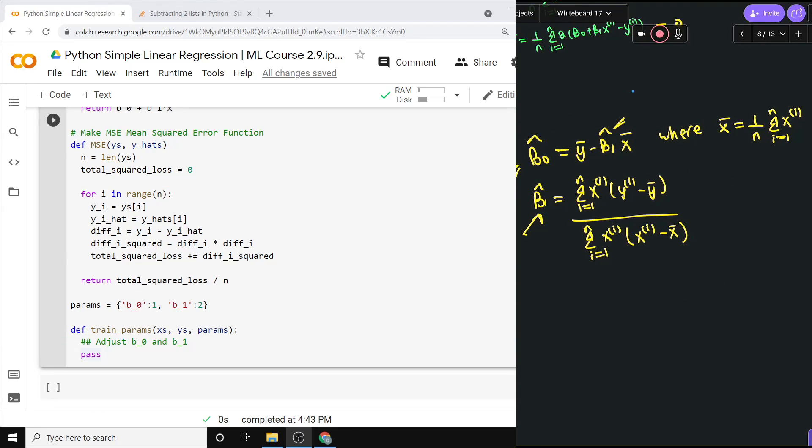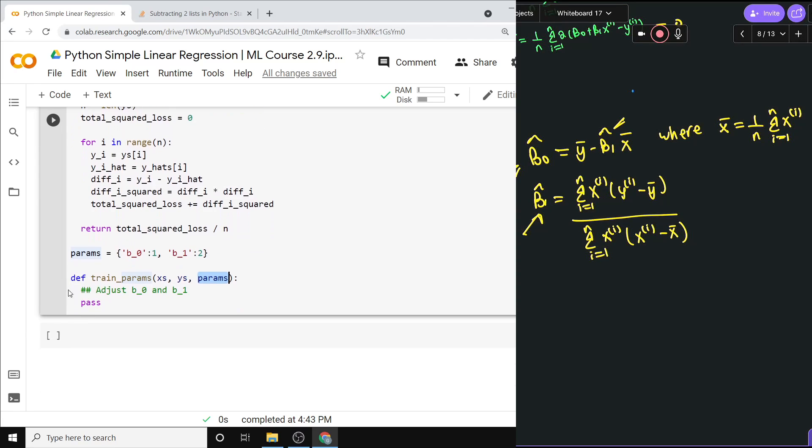So the last important piece here is train_parameters, which will adjust beta_0 and beta_1. This is given in the params dictionary. To be clear, this doesn't need to be the same name. These are your parameters we're going to feed into this thing.